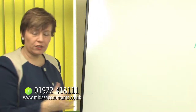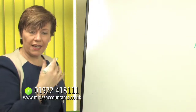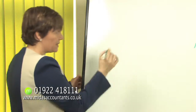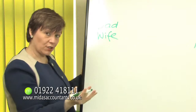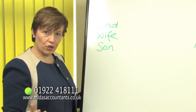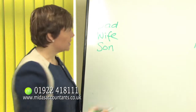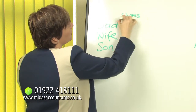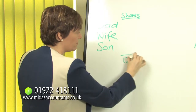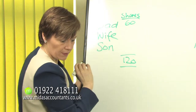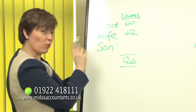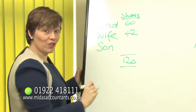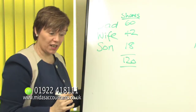Dividends have to be paid out to shareholders in proportion to their shareholding. Let's look at a quick example: we have dad, his wife, and a son. There are 120 shares in this company. Dad has 60 shares, mum has 42 shares, and the son has the remaining 18 shares.